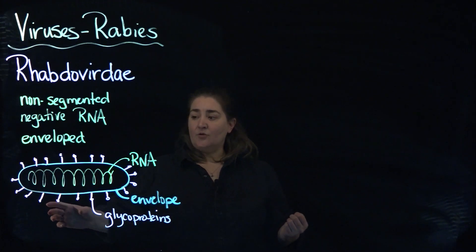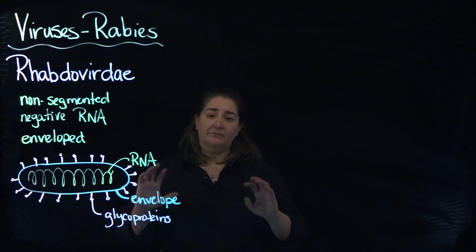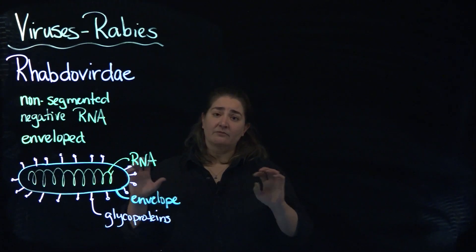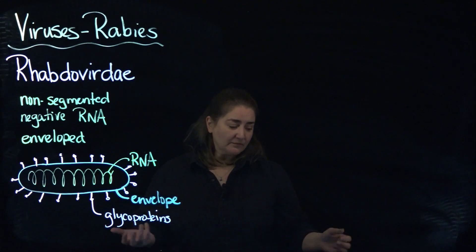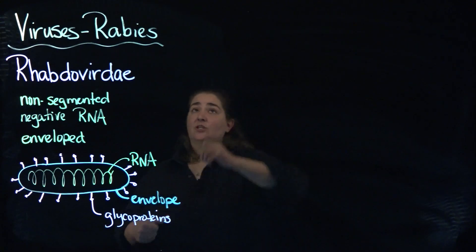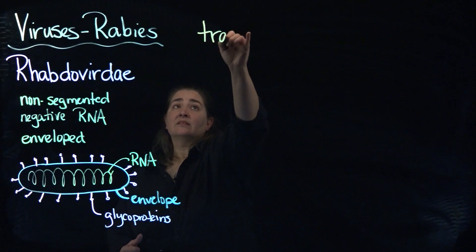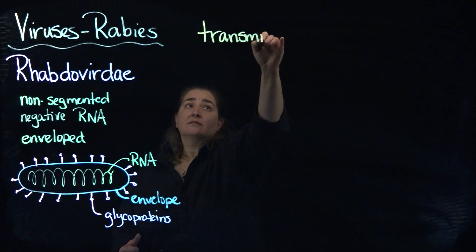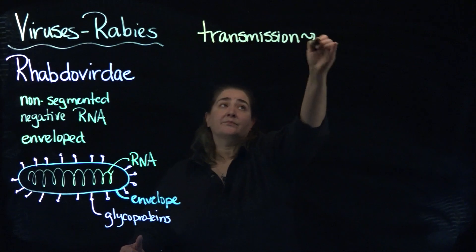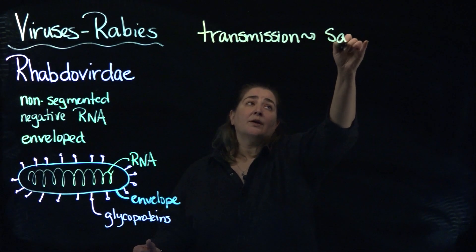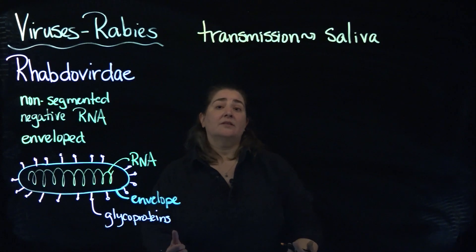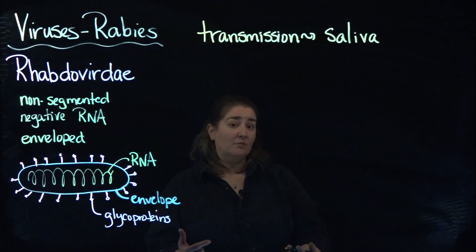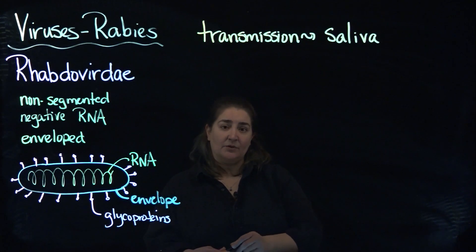The virus is endocytosed via a clathrin-coated pit to be brought into the cell. With regard to transmission of the rabies virus, it is primarily transmitted via saliva, so animal bites are the most common transmission route.